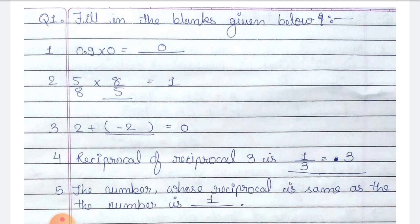Number 2: 5 by 8 multiplied by blank is equals to 1, so the answer is 8 by 5. Number 3: 2 plus blank is equals to 0, so the answer is minus 2.